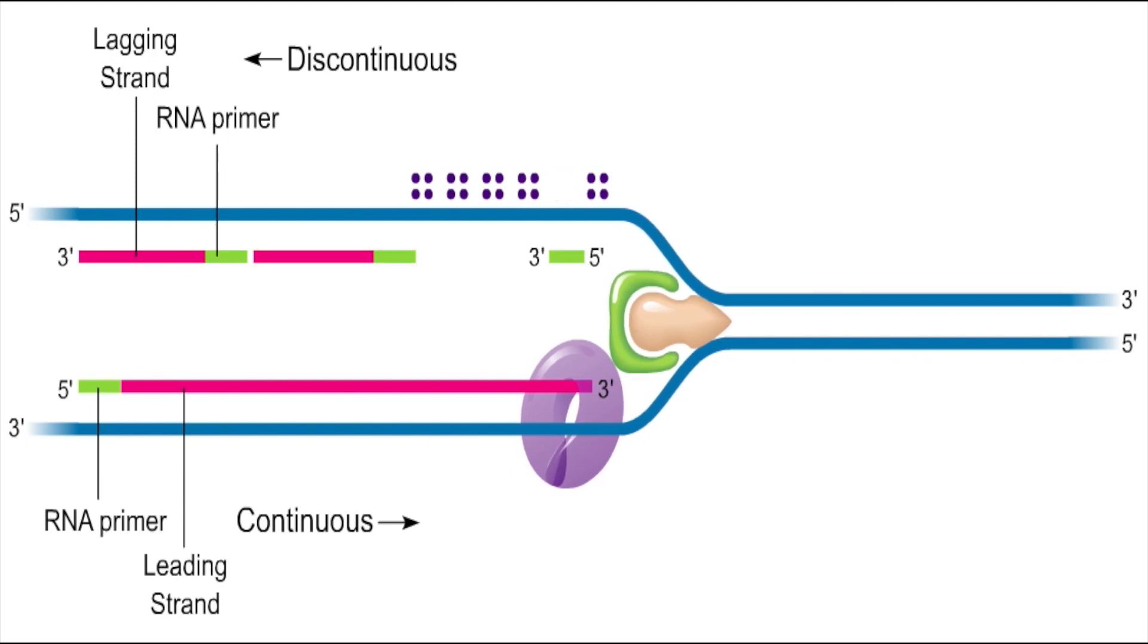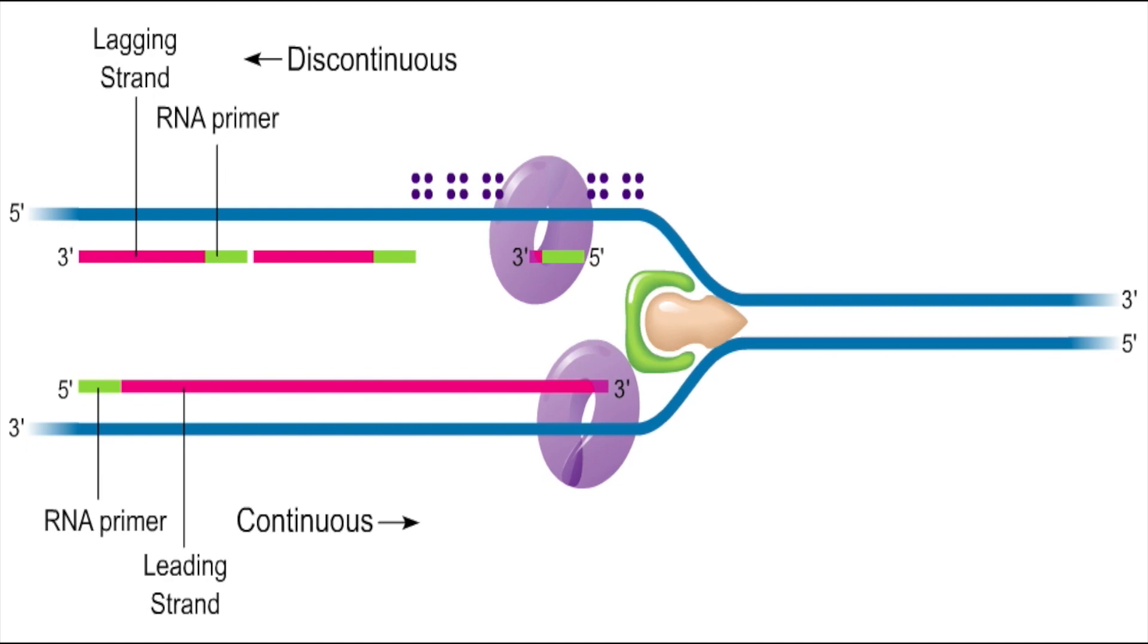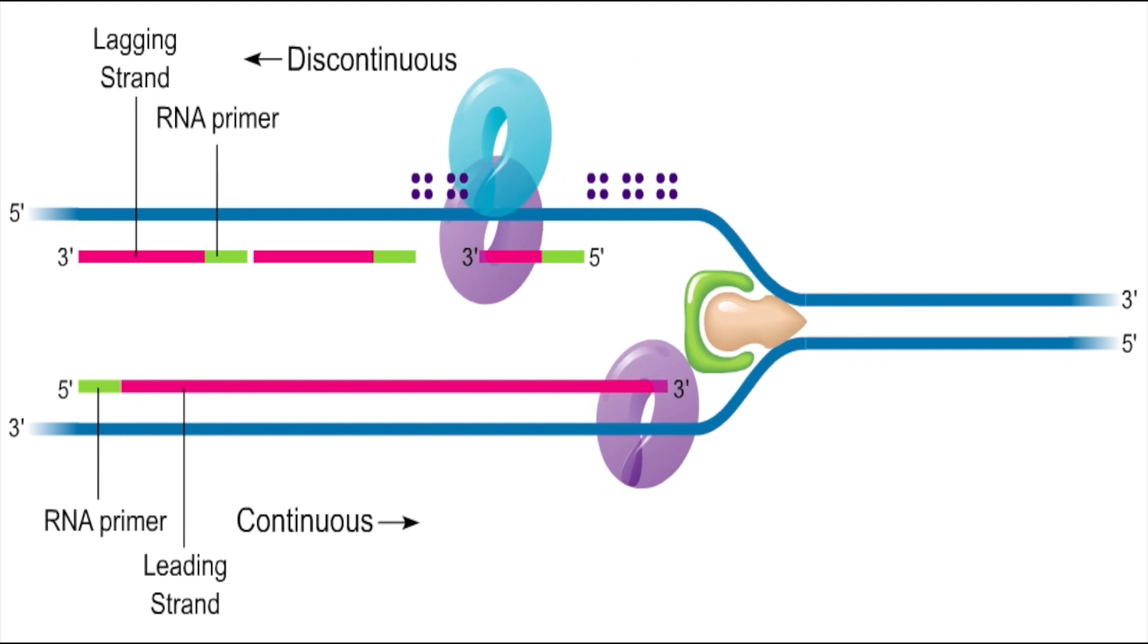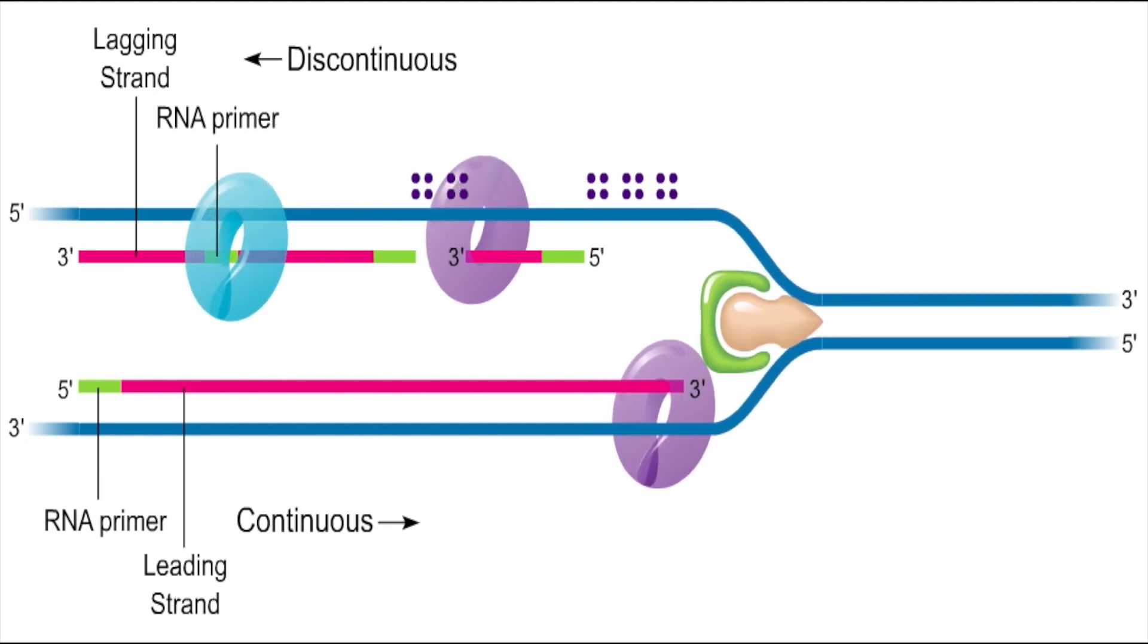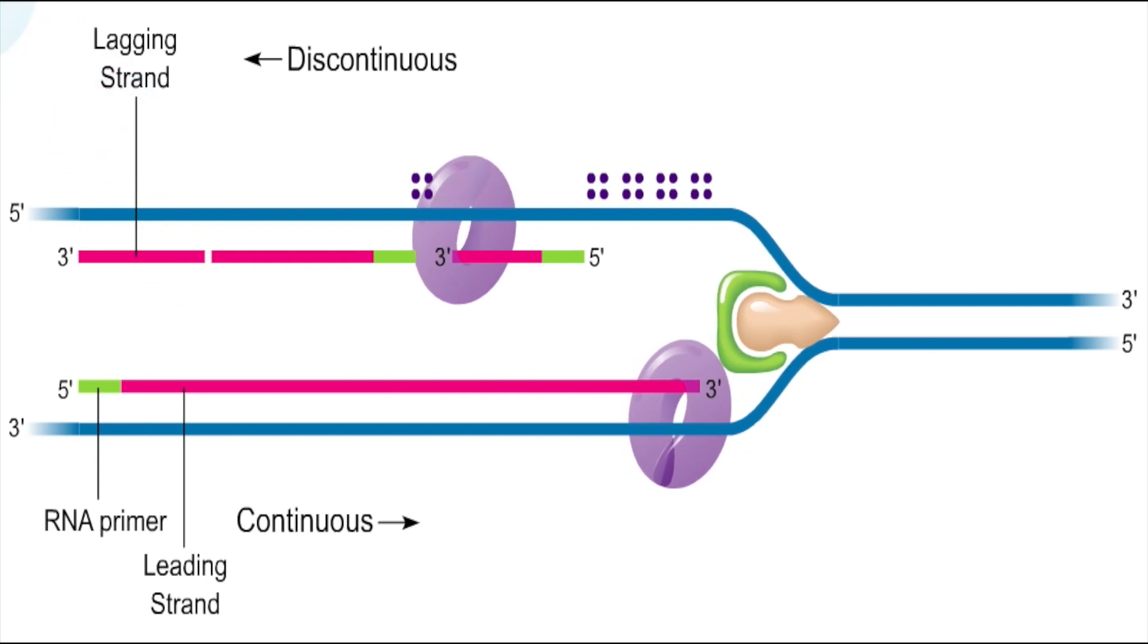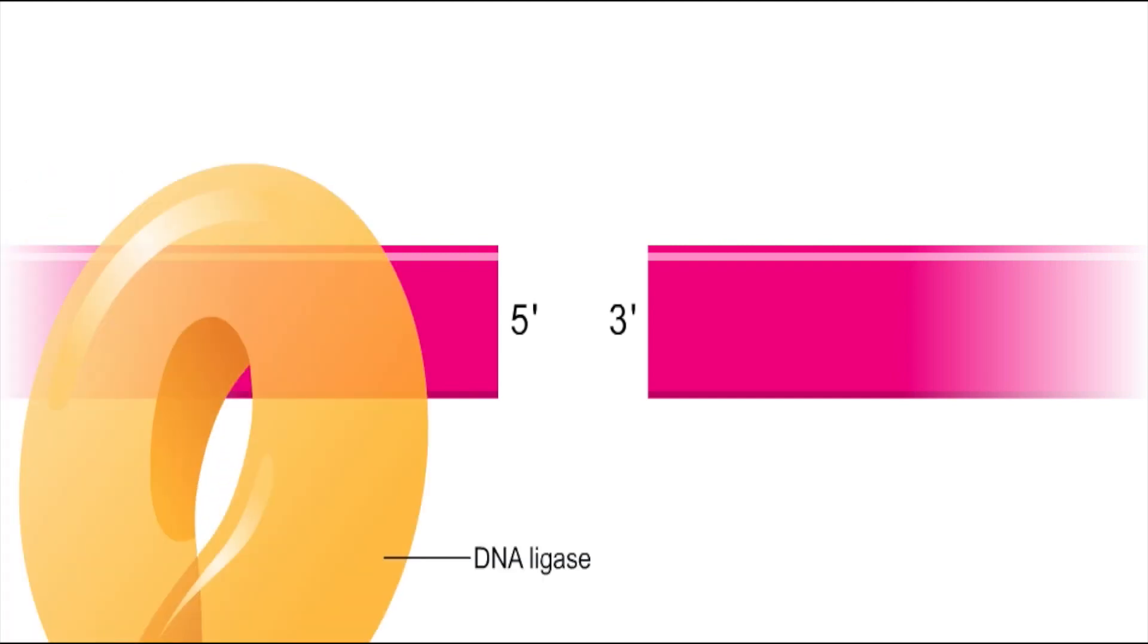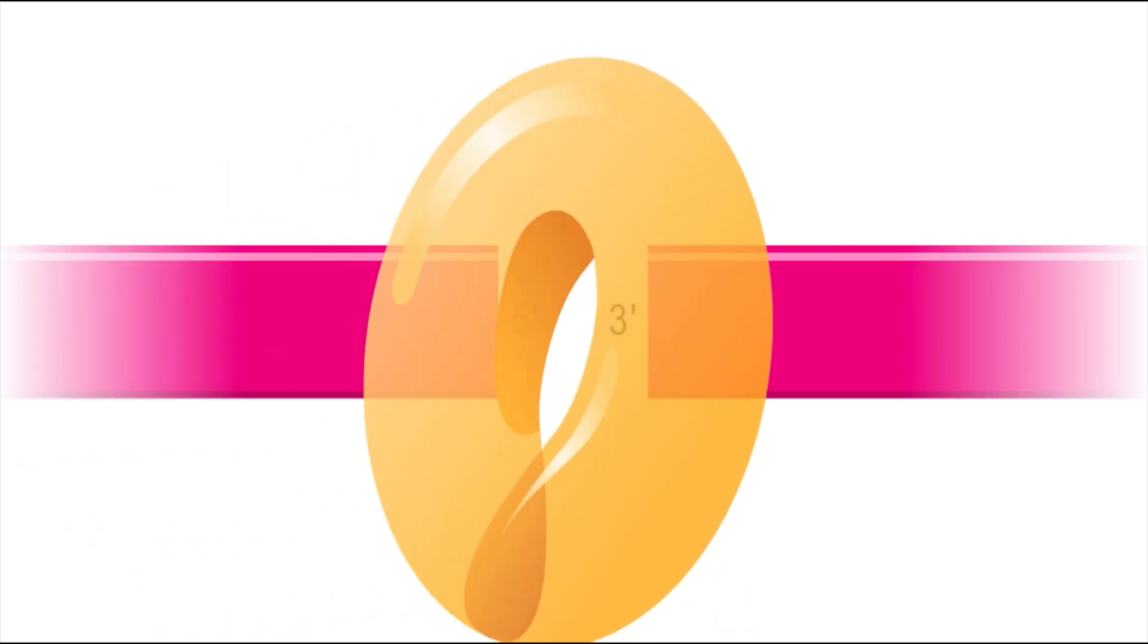Even as synthesis of a new Okazaki fragment begins, the first two Okazaki fragments are joined together into a continuous strand. First, another DNA polymerase, DNA polymerase I, removes the RNA primer and replaces it with DNA. After the primer nucleotides have been replaced, a single-stranded gap still exists between adjacent nucleotides. An enzyme known as DNA ligase closes these gaps. The action of DNA ligase produces a longer, continuous DNA strand.